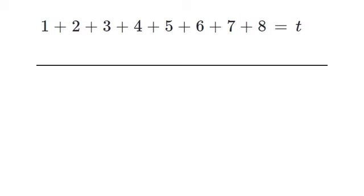If we now take each of these numbers in reverse order and write them like this, and then add them up, we of course get t again.